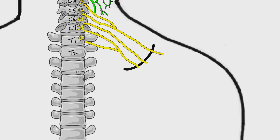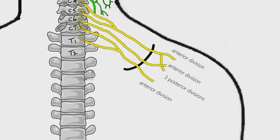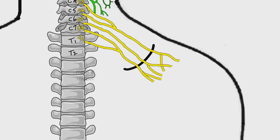Each trunk divides into anterior and posterior divisions near the clavicle. So there are six divisions — three anterior divisions and three posterior divisions. The divisions leave the posterior triangle of neck and enter into the axilla.